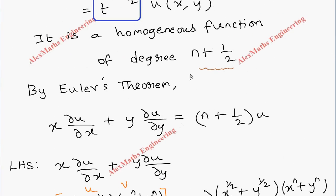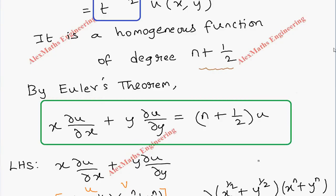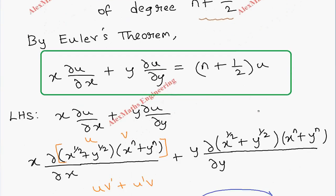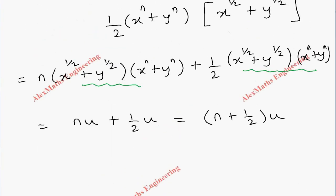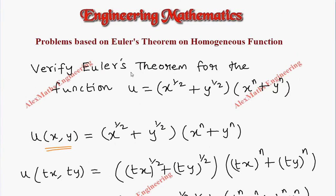We started with the left hand side and obtained the right hand side, (n + 1/2)·u, which equals the RHS. Hence we have successfully verified Euler's theorem for the given function.